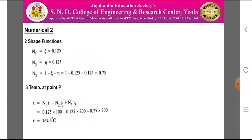The shape functions are: N1 = epsilon = 0.125, N2 = neta = 0.125, and N3 = 1 − epsilon − neta = 0.75. The temperature at point P is T = N1·T1 + N2·T2 + N3·T3 = 0.125×100 + 0.125×200 + 0.75×300 = 262.5°C. Therefore, the temperature at point P within the triangular element is 262.5°C.